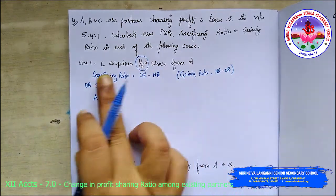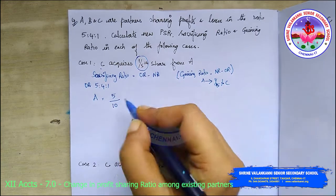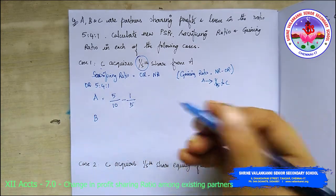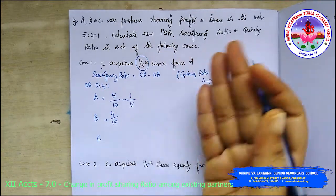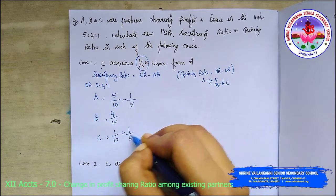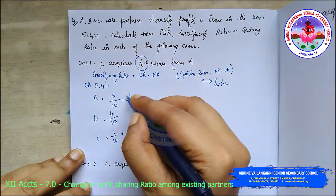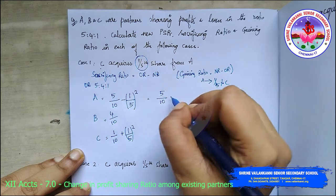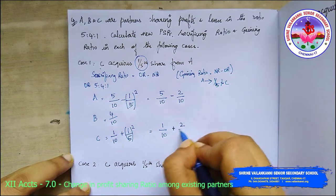A is willing to give 1/5 share to C, so I am deducting one-fifth from A's share. B has no change of ratio, so 4/10 remains. For C, the old ratio is 1/10 plus 1/5 that he is gaining. To equalize the denominator, multiply 1/5 by 2 to get 2/10. So we have 5/10 minus 2/10 for A, and 1/10 plus 2/10 for C.